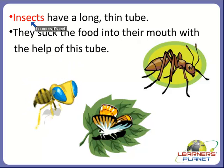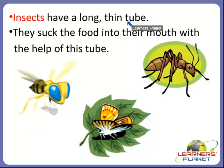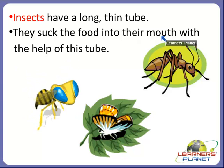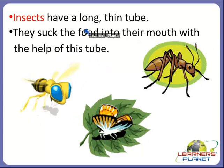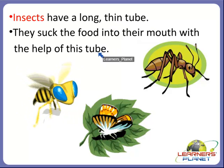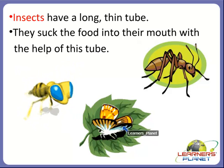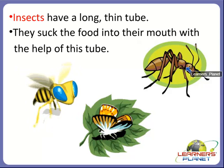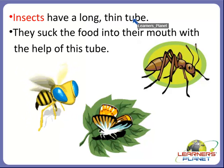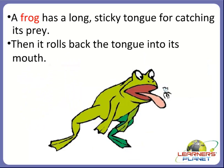Insects have a long thin tube. They suck food into their mouth with the help of this long thin tube. For example, honeybees, butterflies, and mosquitoes use this long thin tube to suck their food.